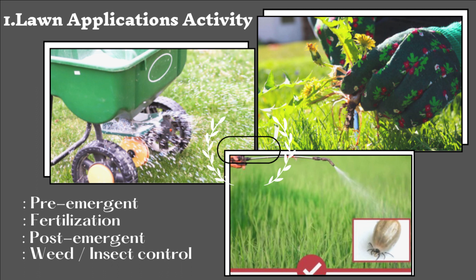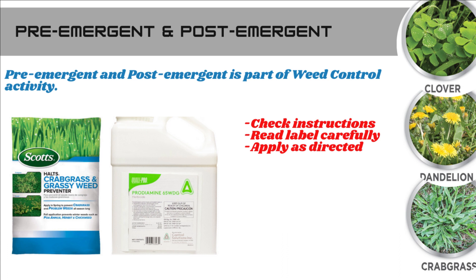Lawn application means any treatment we are applying to the lawn. We mainly see four action items here: the first is pre-emergent, the second is post-emergent, the third is fertilization, and the fourth is insect control. Pre-emergent and post-emergent are part of the weed control process.